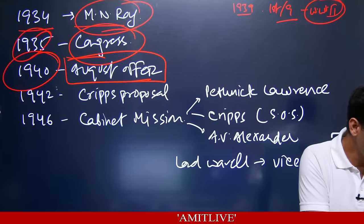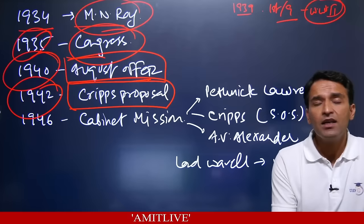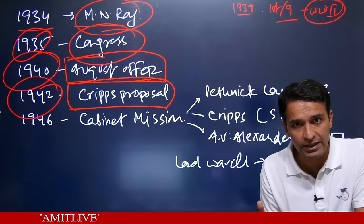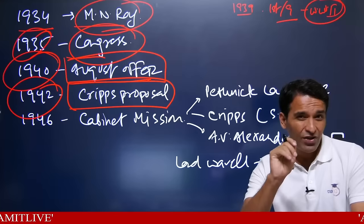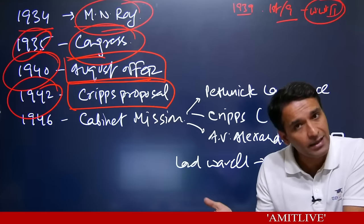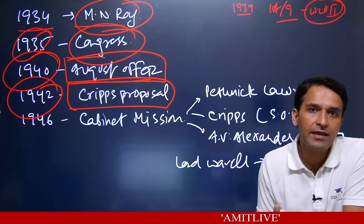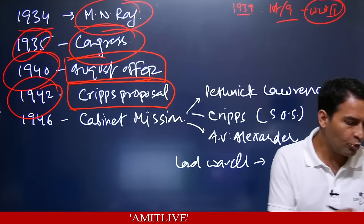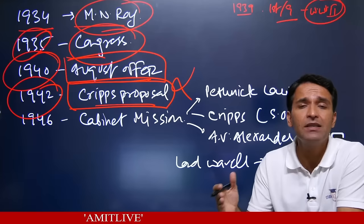Cripps was a British cabinet member who came to India to gain Indian support for the war, proposing how the constitution would be made after World War II. This became a bone of contention — Cripps said we'll make a constitution after World War II ends, whereas Gandhiji and the Indian National Congress said no, we want dominion status now, we will not wait. So the Cripps Mission failed.